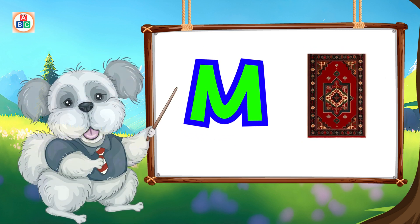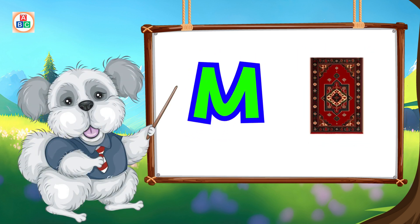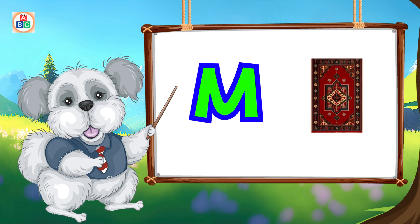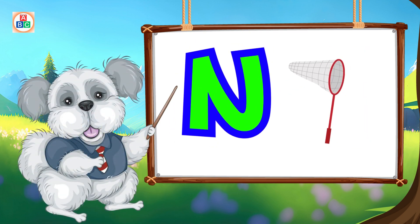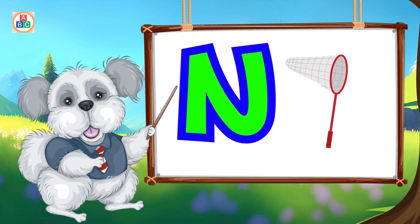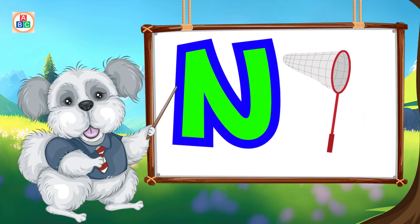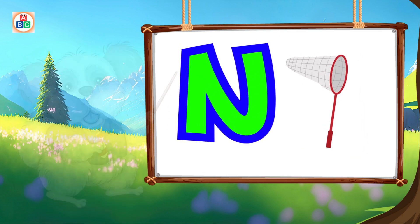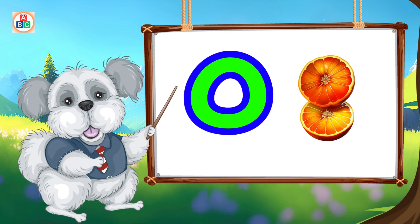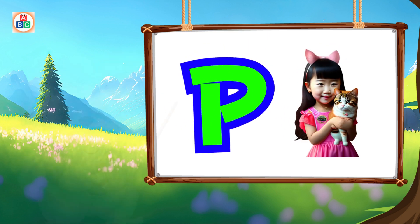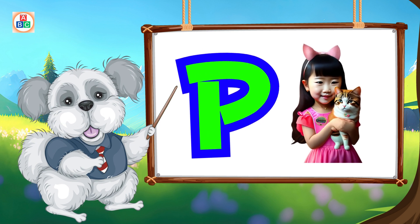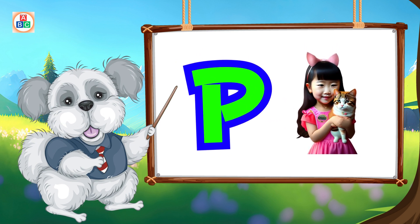M is for mat, m-m-mat. N is for net, n-n-net. O is for orange, o-o-orange. P is for pet, p-p-pet.